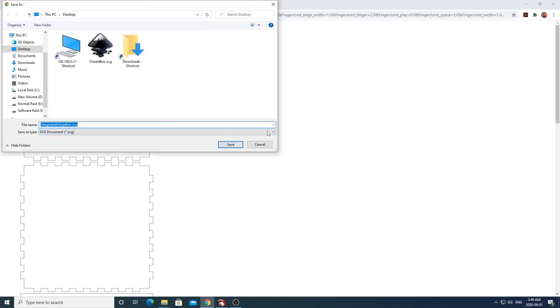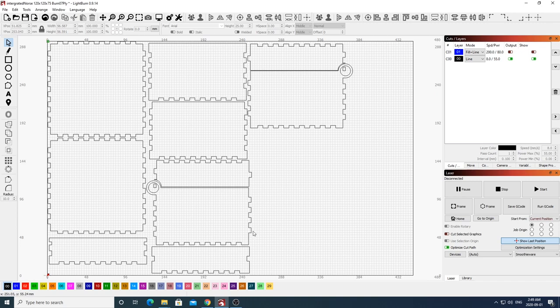I'm going to go ahead and save this SVG file to my computer and then open it up in LightBurn. Here's what the file looks like opened up in LightBurn. I've of course already went ahead and laid this out to best fit my plywood piece.